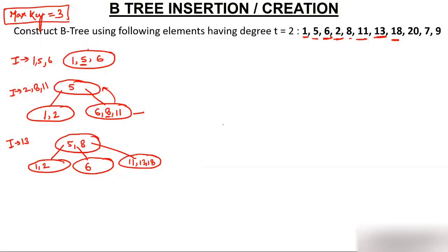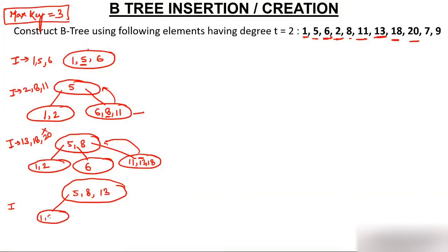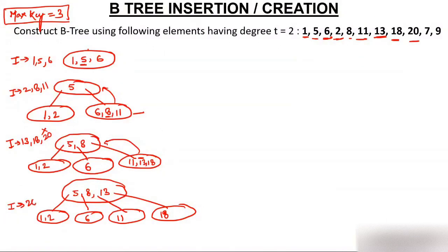Now insert 18 — it goes to the right of 13. Then insert 20, but 20 cannot be inserted because that node (11, 13, 18) is already full. So we split again from the middle element, which is 13. The element 13 goes up to join the root, making the root 5, 8, and 13. Elements less than 5 (1, 2) form the first child, 6 forms the second child, 11 forms the third child, 18 forms the fourth child, and 20 is now inserted after 18.